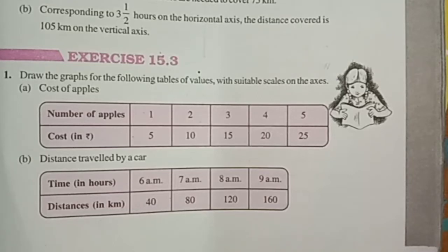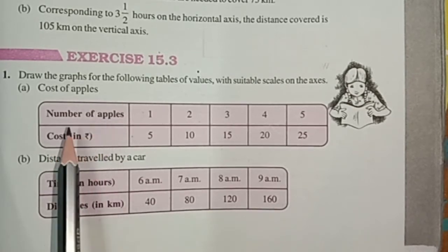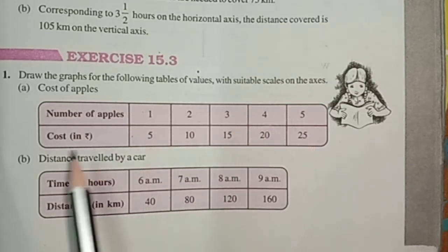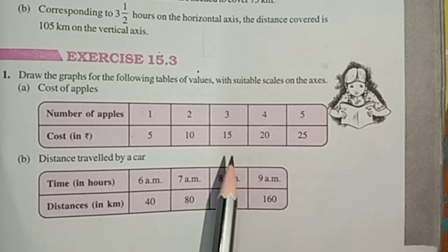I am going to start with Exercise 15.3, question number 1. Draw the graph for the following tables of values with suitable scales on the axis. Number a, cost of apples. In the box, number of apples given: 1, 2, 3, 4, 5, and cost given in rupees: 5, 10, 15, 20, 25.